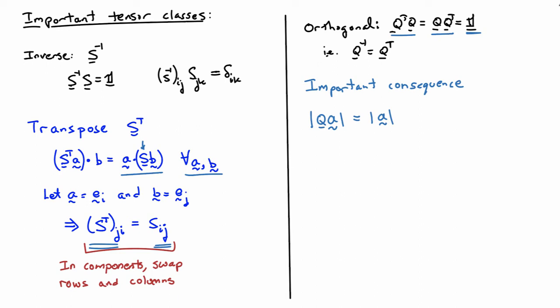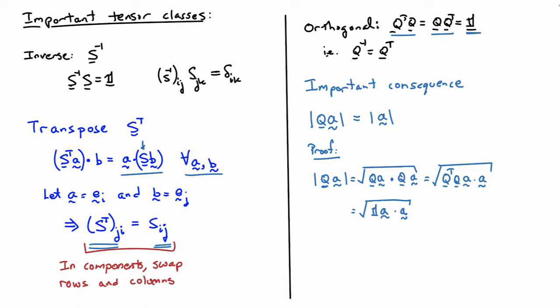An important consequence is that the norm of Q acting on a vector a equals the norm of a itself — Q rotates the vector without changing its length, only its orientation. The proof: the norm of Qa is the square root of Qa dotted with Qa. Applying the definition of transpose moves one Q across the dot product, giving Q transpose Q inside, which is the identity. So we get the square root of a dotted with a, which is the norm of a.